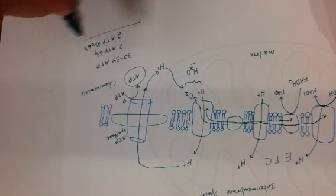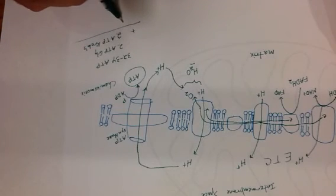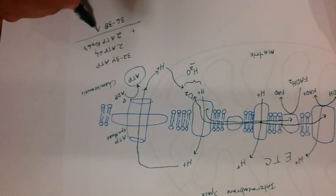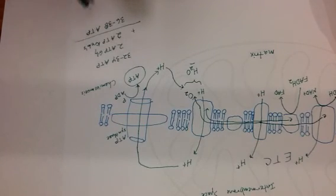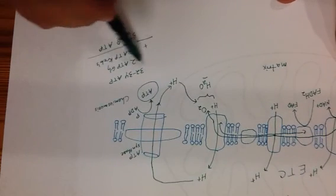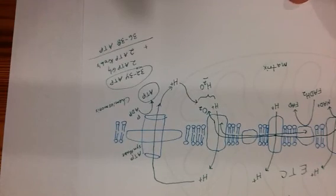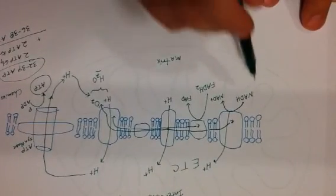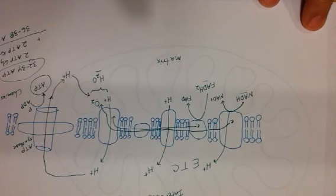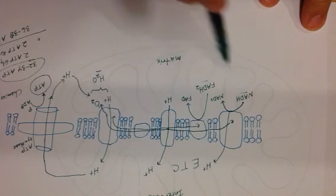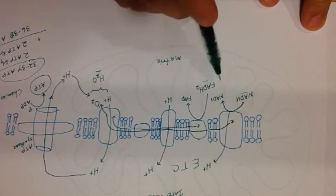So if you do all three aerobic steps, you're going to end up with 36 to 38 ATP molecules. And again, you're getting 32 to 34 from your very last step, tapping into the potential energy of these electron carrier molecules, which you made. NADH is made in glycolysis and the Krebs cycle, and FADH2 is made in the Krebs cycle.